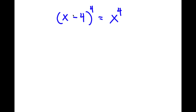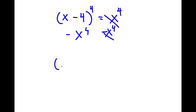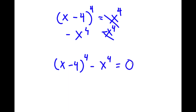So in this problem, I have x minus 4 to the power of 4 is equal to x to the power of 4. The first thing I'm going to do is subtract x to the power of 4 on both sides. So these two cancel out, and I have x minus 4 to the power of 4 minus x to the power of 4 is equal to 0.